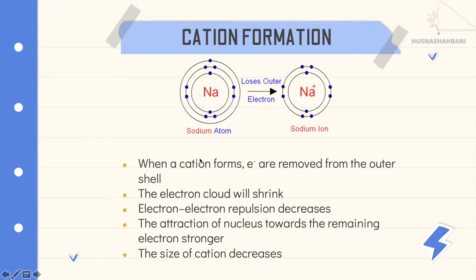For cation formation, for example, a sodium atom loses its one outer valence electron to become sodium ion Na⁺. When a cation forms, electrons are removed from the outer shell, so the electron cloud shrinks. In the ion, electrons only occupy n=1 and n=2.